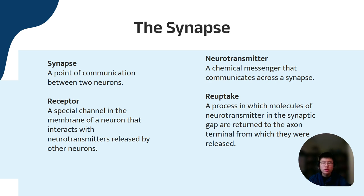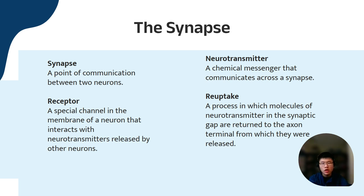The synapse is the gap between two neurons — it's a point of communication between two neurons where they receive messages. A neurotransmitter is the chemical messenger that communicates across a synapse. So while we talk about electrical impulses, we also have chemical impulses. A receptor is a special channel in the membrane of a neuron that interacts with neurotransmitters released by other neurons. Reuptake is a process in which neurotransmitter molecules in the synaptic gap are returned to the axon terminal from which they were released.